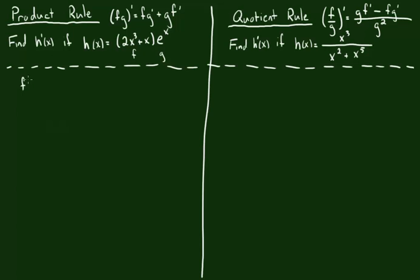So let's find all of those pieces. F prime, the derivative of the first function, is just going to be 6x squared plus 1. And g prime — the derivative of e to the x — is just going to be e to the x.